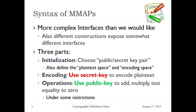In all the constructions, there are three parts: initialization, encoding, and operations. Initialization is derived from an encryption scheme — it naturally generates a public and secret key pair. Then there is encoding — this is where these constructions differ from things like discrete log: you need the secret key in order to encode elements. Once you have the encoded elements, you can use the public key to add, multiply, and test for zero, under some restrictions — not every two encodings can be added or multiplied.